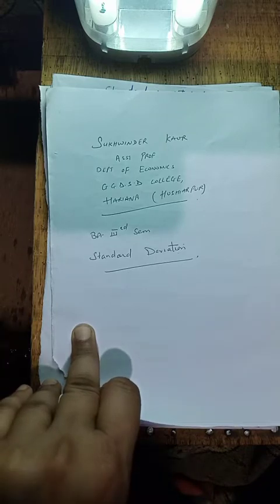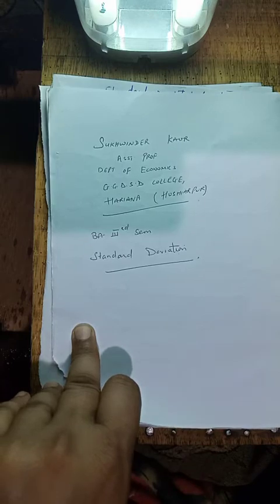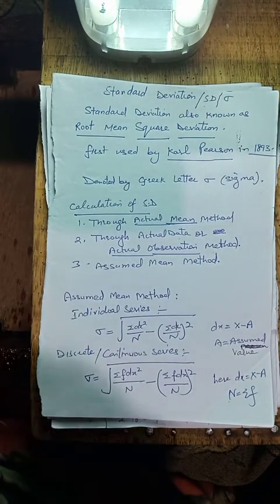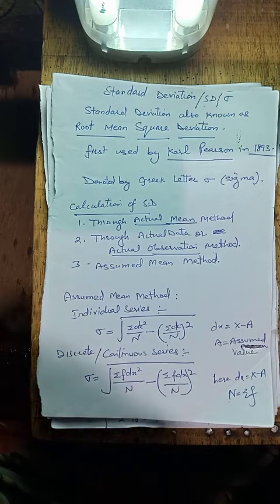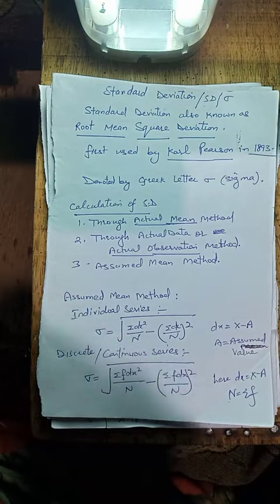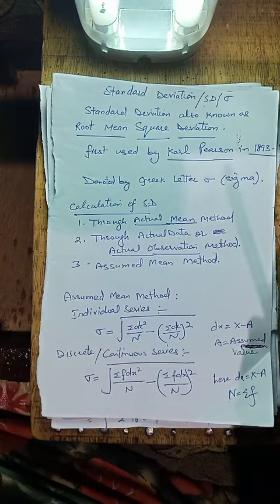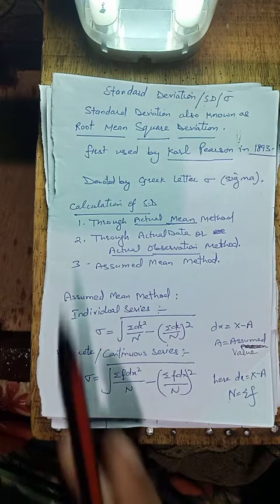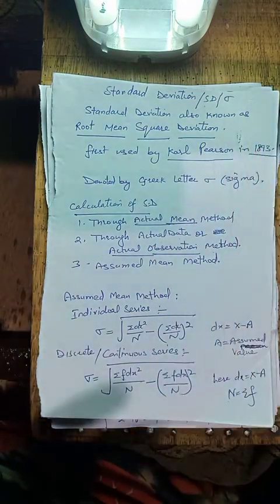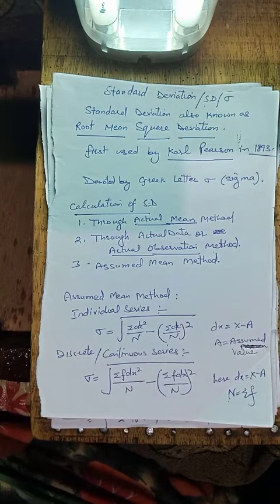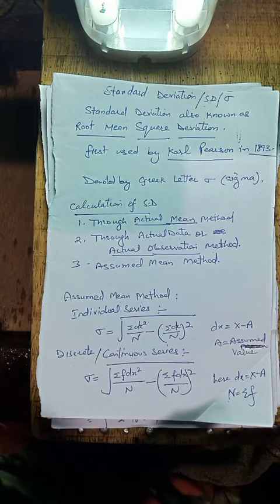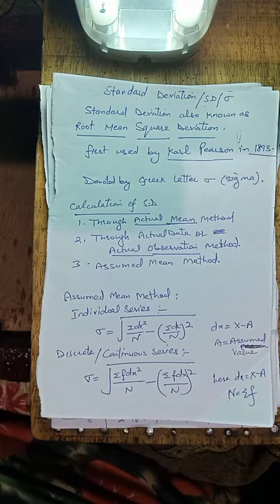Today I am going to discuss BA 3rd Semester's topic: Standard Deviation. What is Standard Deviation? Standard Deviation is the most important and widely used measure of dispersion. It was first used by Karl Pearson in 1893. Standard Deviation means the square root of the arithmetic mean of the squares of the deviations of the values taken from the mean.